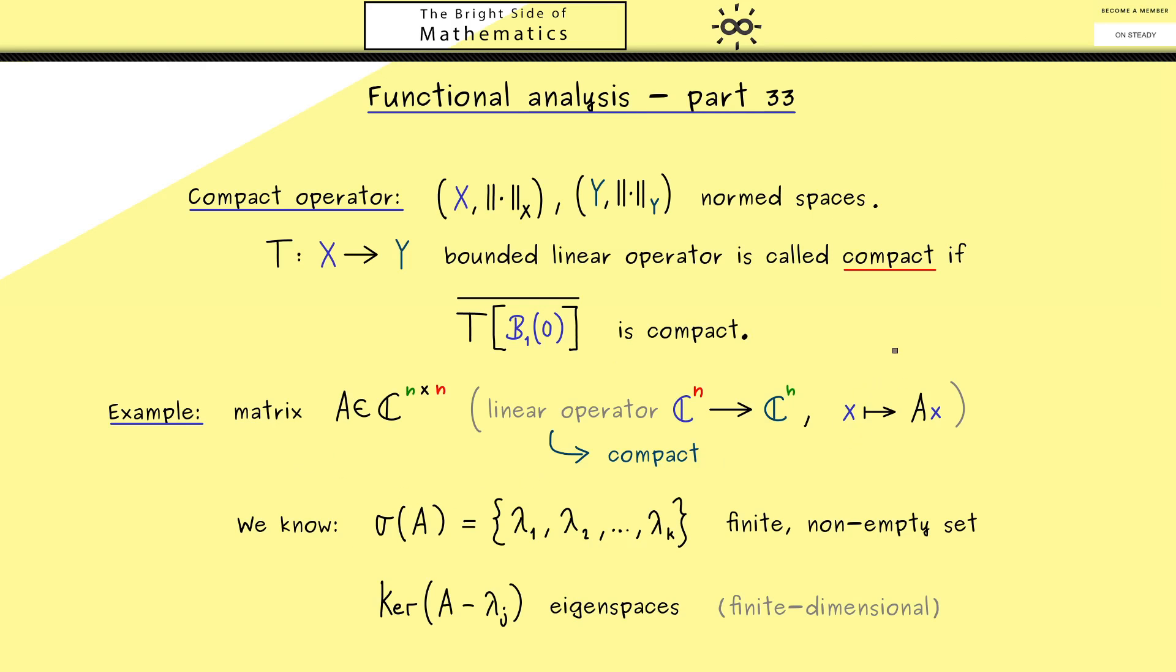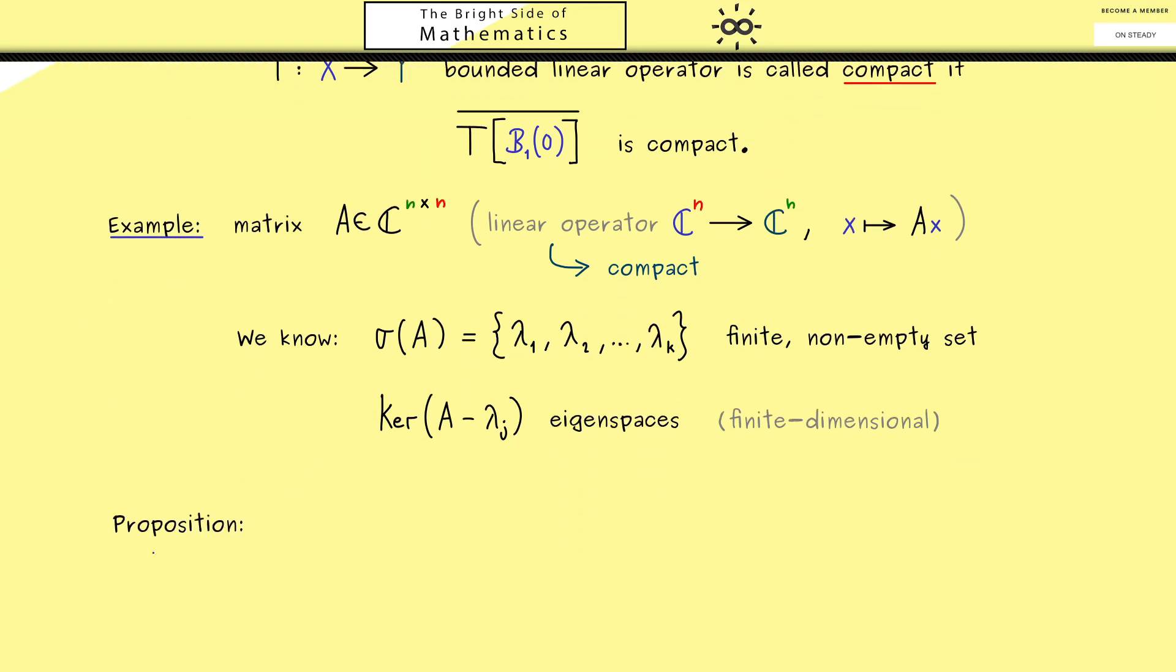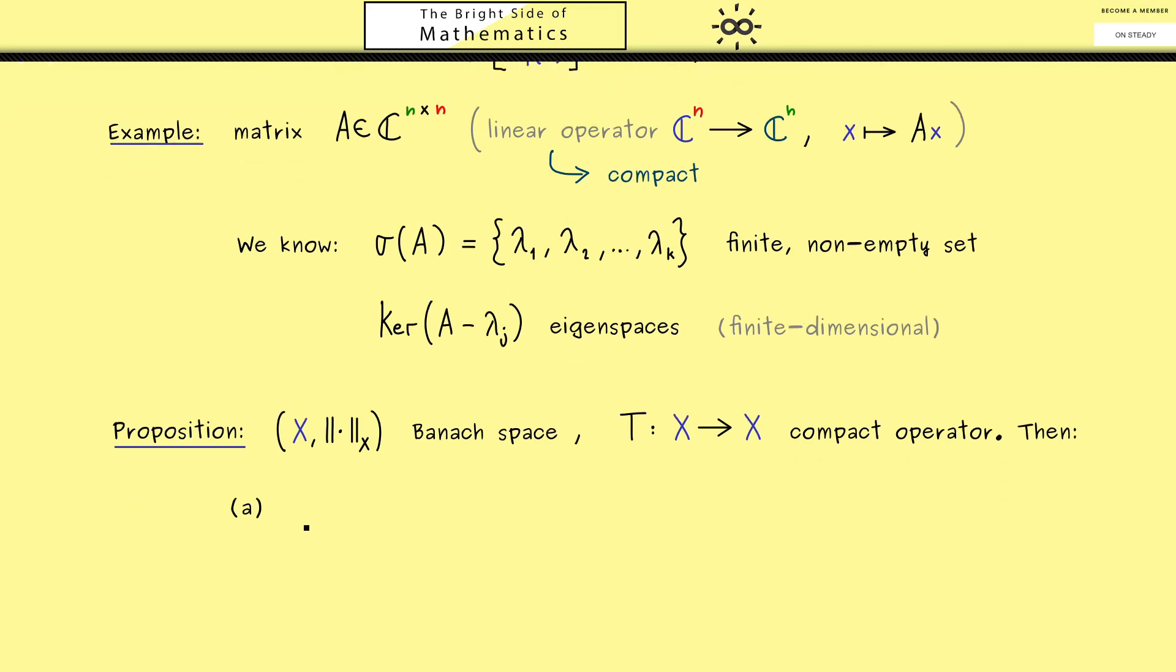Indeed we will see that soon and maybe let's summarize all the facts in a proposition. So in general what is the spectrum of a compact operator? Hence what we need now is one complete normed space, a Banach space X. And then we take an operator T from X to X and this one should be a compact one. And then let's talk about the spectrum of this operator.